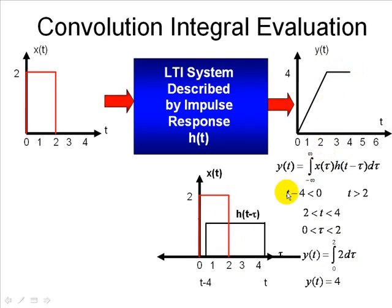And then finally, our expression, when we shift this again to the left, here's our lower limit, t minus 4 to 2. And we can see that the area starts to decrease. We're going to again multiply and integrate, 2 times 1, and then our lower limit is t minus 4, and our upper limit is 2. And as we shift this h of t minus tau to the right, this area that's common to them will be getting close, will decrease and go to 0.